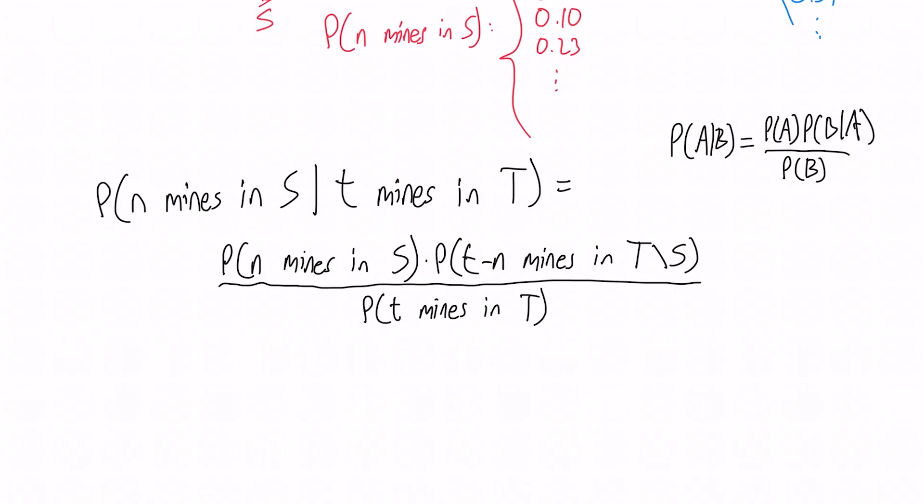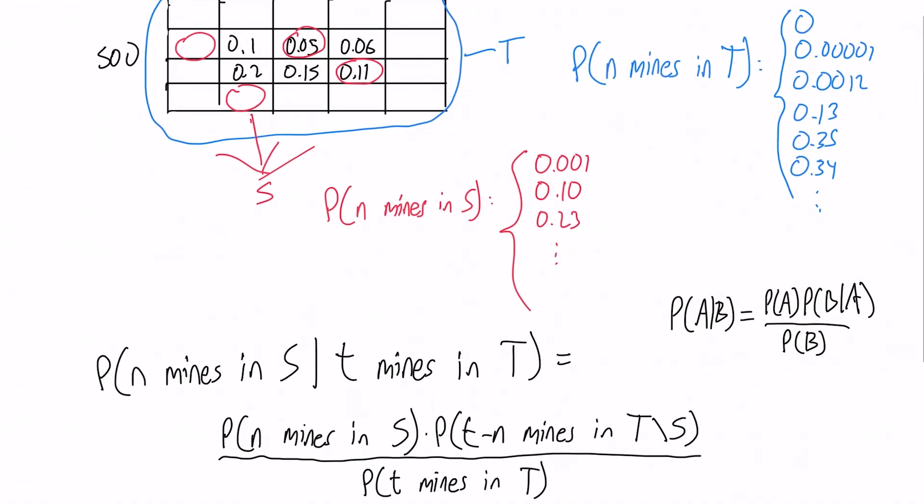However, it's a very difficult problem to actually get this to run in time, because there is a dynamic programming way to calculate these probabilities. You can start with a distribution that just contains one. The probability of having zero mines is one. And then you can add the mines one by one using dynamic programming to figure out what this distribution is. If you add the mines one by one, you eventually end up with the correct distribution.